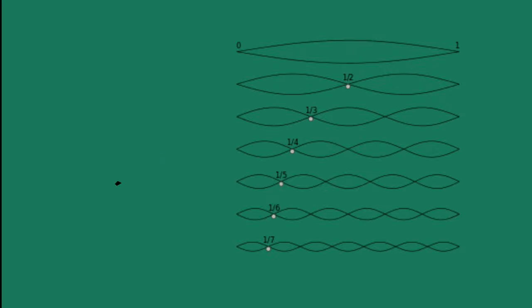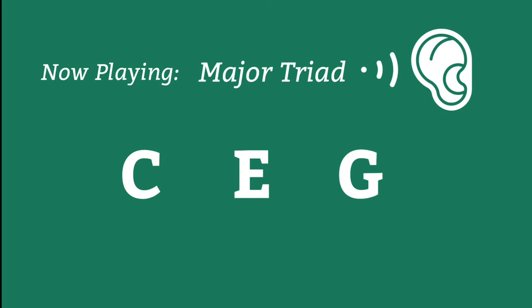If I add in the fifth overtone we talked about earlier, which is the major third, we get a very familiar and stable sound. This is our major triad. See how that works?